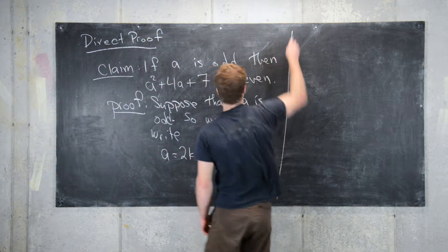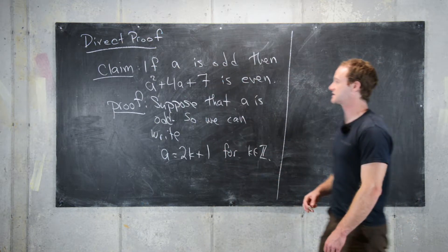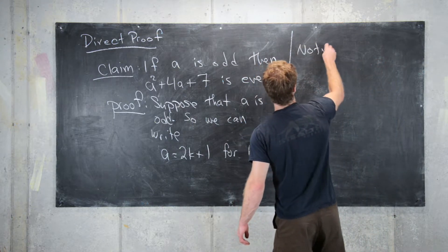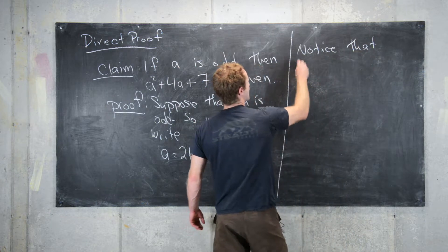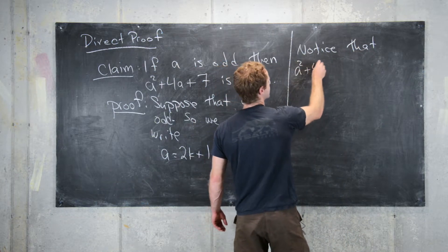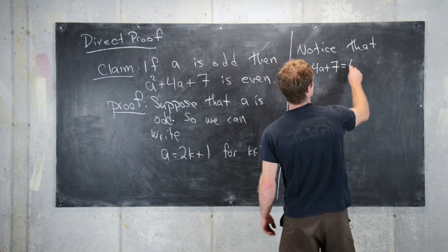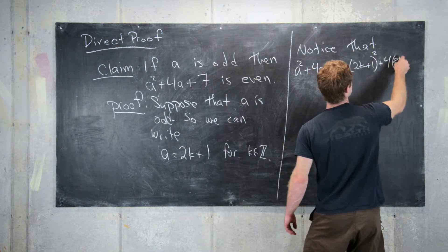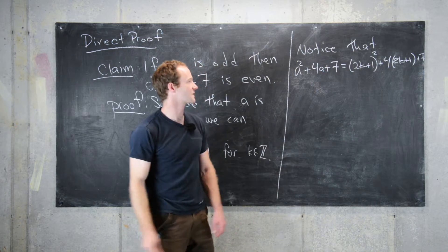Now that we're set up, we want to plug this version of a into this quadratic expression. Notice that a²+4a+7 = (2k+1)²+4(2k+1)+7.